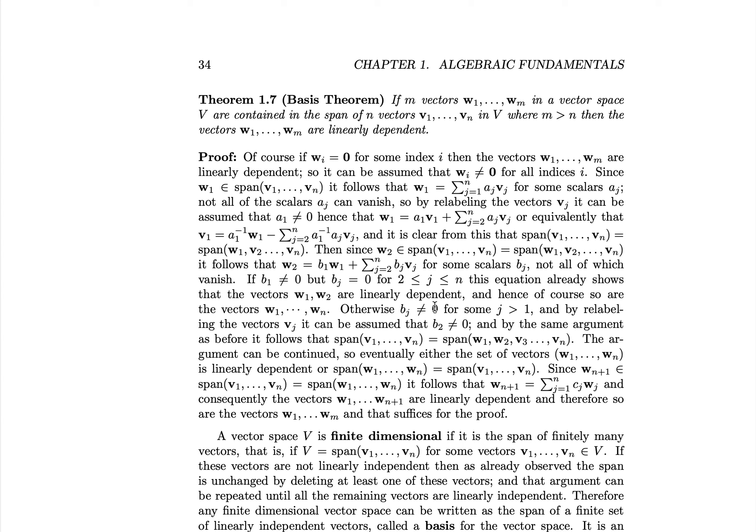As noted, if any of the w elements are zero, then they're linearly dependent and we're done. So assume that is not the case. We have w1 in the span of the v_j's, so we can write w1 as the sum of a_j * v_j for some scalars, not all of which vanish. Relabeling so that a_1 is non-zero, we have w1 equals a_1 * v1 plus the rest. So you can rewrite v1 in terms of w1 and the remaining vectors: v1 equals a_1 inverse * w1 minus the rest. Therefore the span of v1 to vn equals the span of w1, v2 to vn.